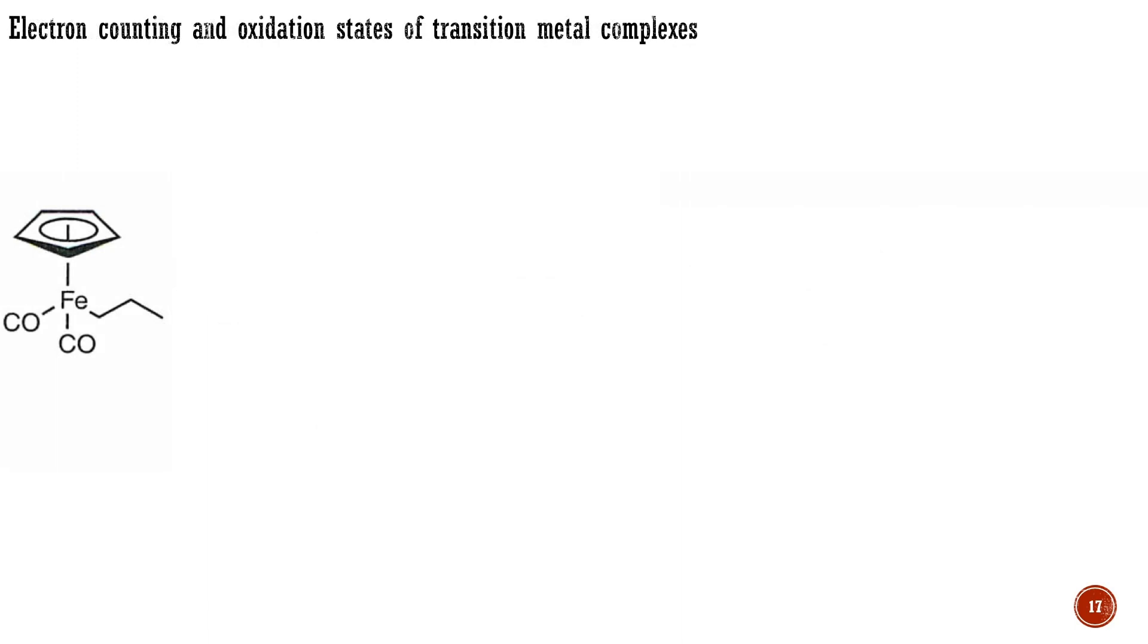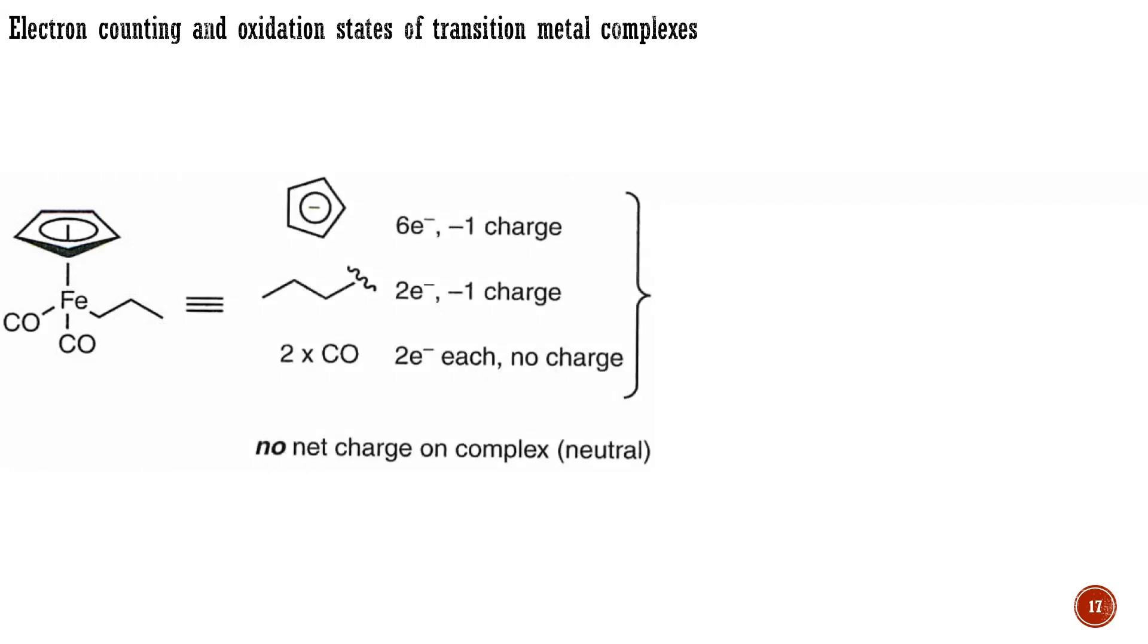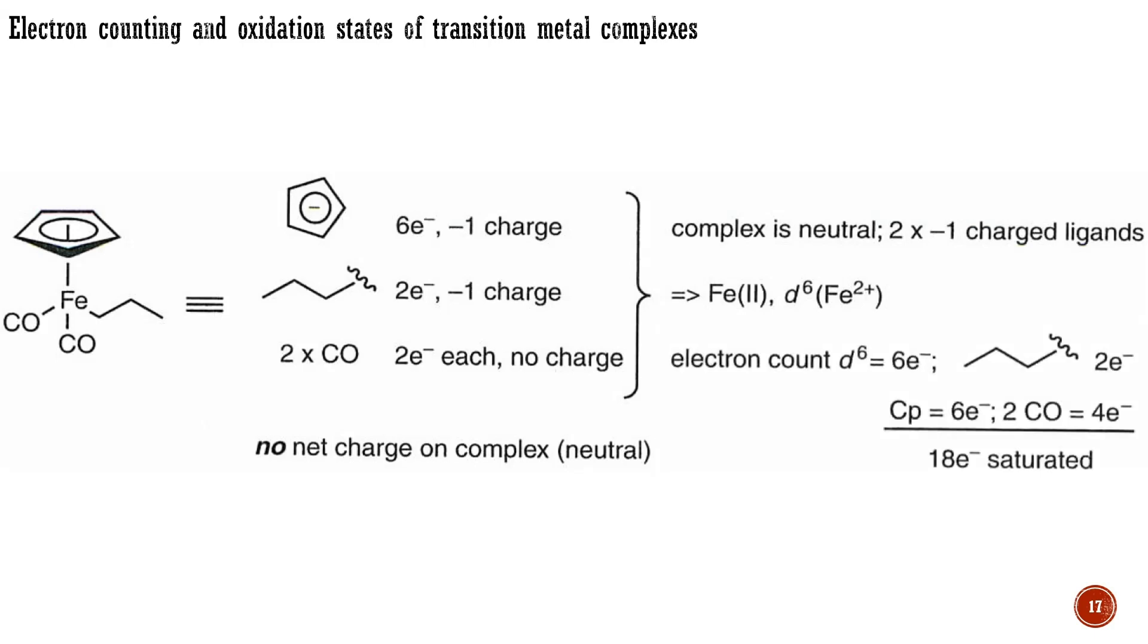With all the preceding information in hand, it is now possible to consider virtually any transition metal complex, assign the oxidation state of the metal, assess the total number of electrons in the bonding shell, and decide if that complex is coordinatively saturated or unsaturated. For example, the iron complex shown here is a stable, neutral species containing two formally mononegative ligands. One of them is the propyl group, an eta-1 2-electron donor X-type ligand. The other is the cyclopentadienyl ligand abbreviated as Cp, which is an eta-5 6-electron donor ligand. The two remaining neutral carbon monoxide ligands contribute two electrons each. Since the overall complex is neutral and has two mononegative ligands, the iron must have a formal plus 2 charge, making it iron(II) with six d-electrons. For an overall electron count, there are six electrons from the metal, a total of four from the two carbon monoxides, two electrons from the propyl group, and six electrons from the Cp group, for a grand total of 18 electrons. Thus, here we have an iron(II), d6, coordinatively saturated complex.